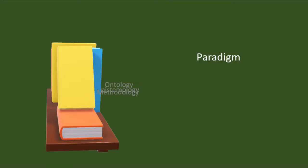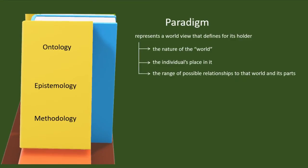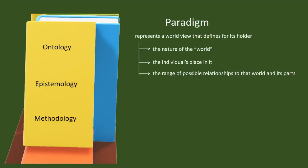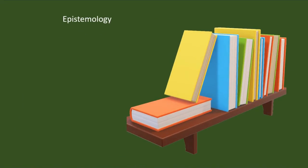A paradigm is a worldview. Paradigms answer three questions that we usually have: What is the nature of the world? What is an individual's place in it? And what are the possible relationships between the world and its parts? To have a clear understanding of these philosophical concerns, we will first look at different types of epistemology.